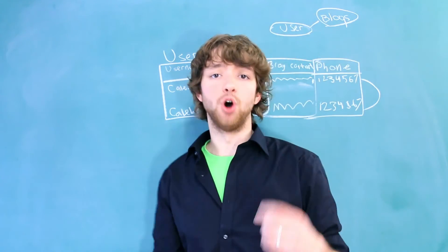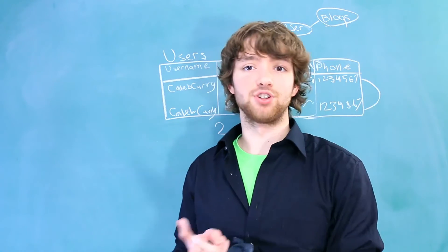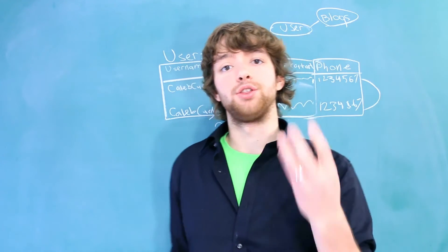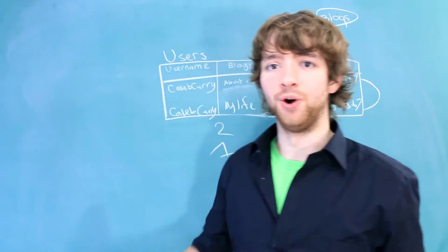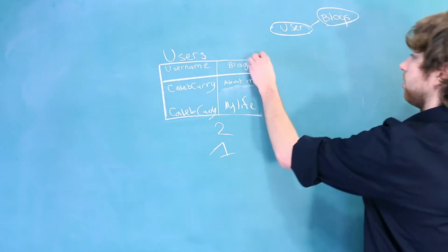You just don't want to do that. So the three ways you don't store this is comma separating your values, adding extra columns, or adding rows with redundant data. Three bad things you don't want to do. Now let's talk about the correct way to do this.